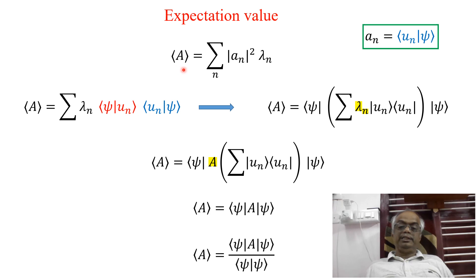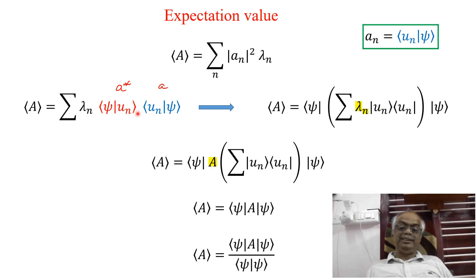Now we got the expression expectation value of A is equal to summation over N modulus AN square lambda N, where AN is equal to the inner product of UN with Psi. So now what is AN modulus square? That is A star A. So A star A. As per definition, this is inner product of UN with Psi is A. Naturally inner product of Psi with UN is A star. So this lambda N is A.